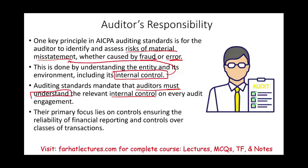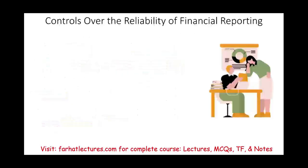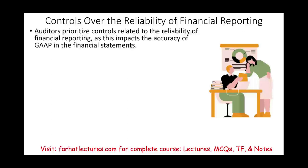The primary focus for testing internal control is the reliability of financial reporting. Internal control has four objectives: reliability of financial reporting, making sure the company is running effectively and efficiently, compliance with laws and regulation, and safeguarding of assets. The auditor's primary objective is reliability of financial reporting — it doesn't mean they ignore the other objectives, but that is their primary focus. Auditors prioritize controls directly related to the reliability of financial reporting, which directly impacts the financial statements audited under GAAP.